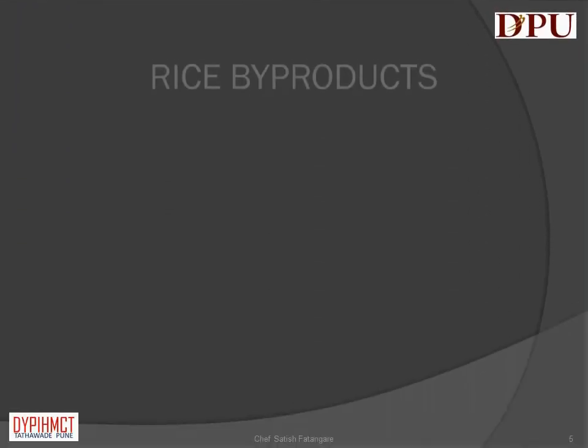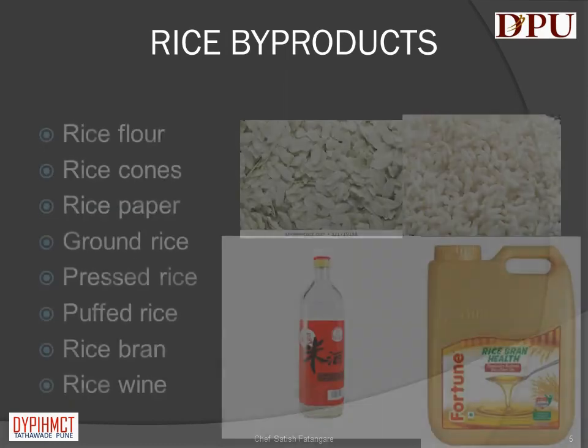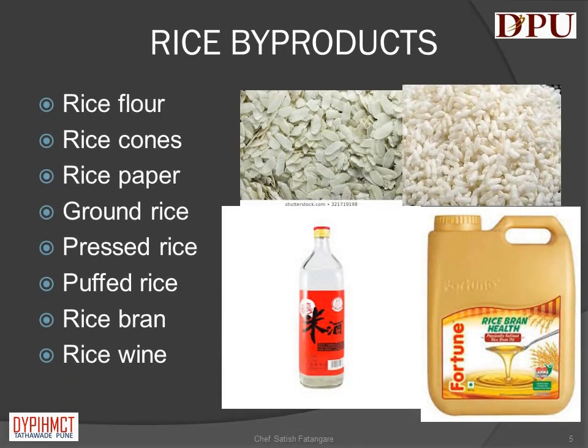In this slide we will talk about the byproducts of rice. The byproducts of rice are: rice flour, rice cones, rice paper, ground rice, pressed rice, puffed rice, rice bran oil, and rice wine.